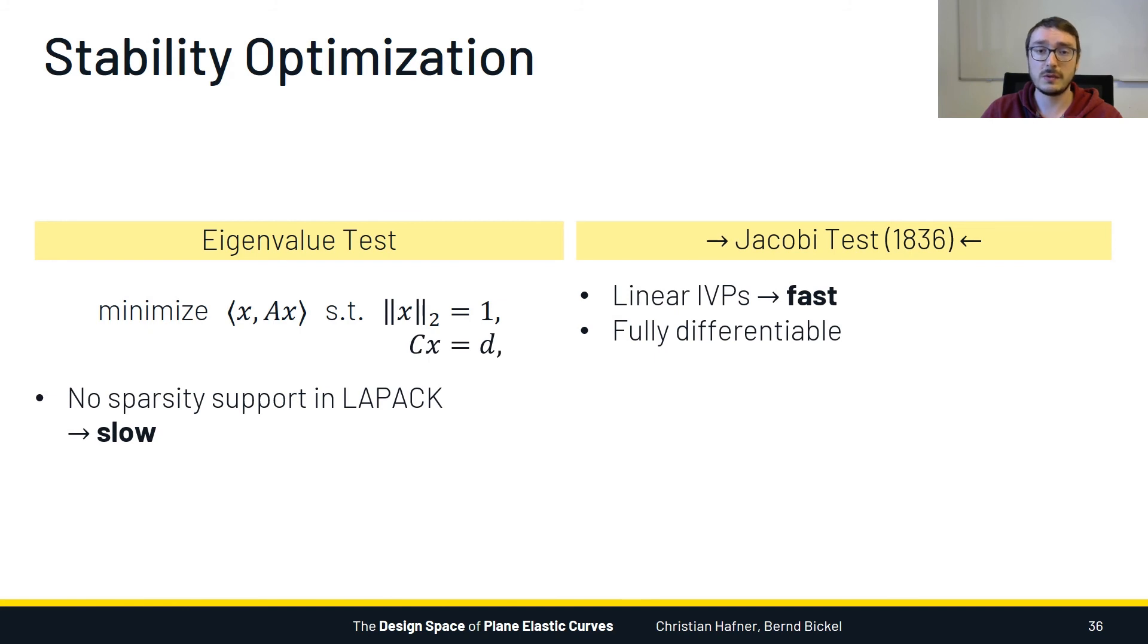This allows us to take a gradient-based approach again to directly optimize the stability of a curve. I am skipping a lot of details here, but I will say that the optimization is ultimately enabled by the geometric characterization theorem that we discussed in the beginning of the talk. This theorem told us that active bending curves have collinear inflection points, and enforcing this geometric constraint is really central for making the algorithm work.